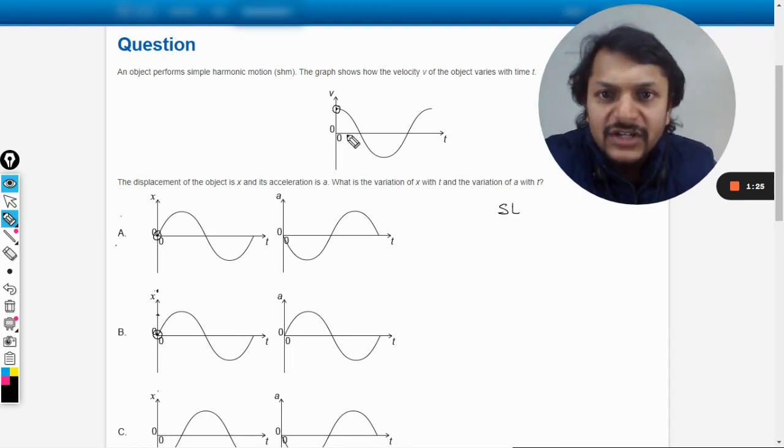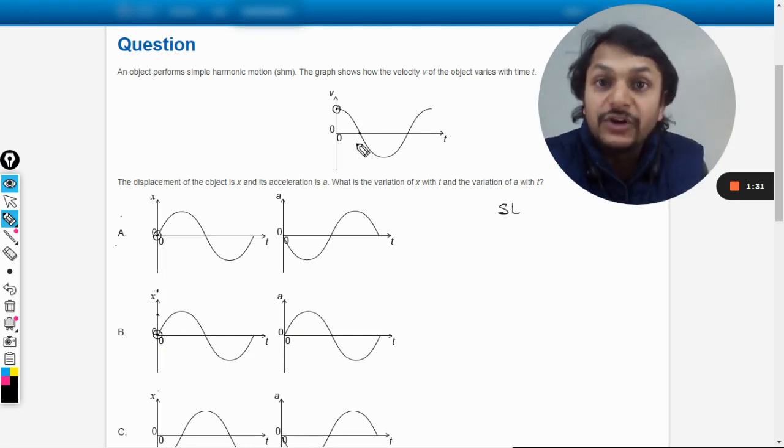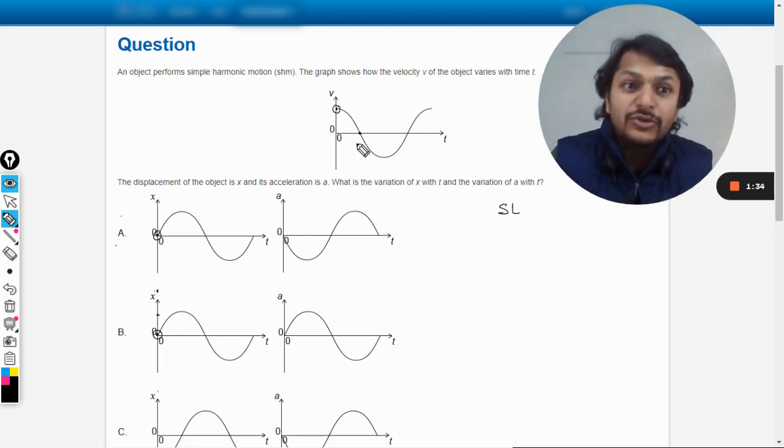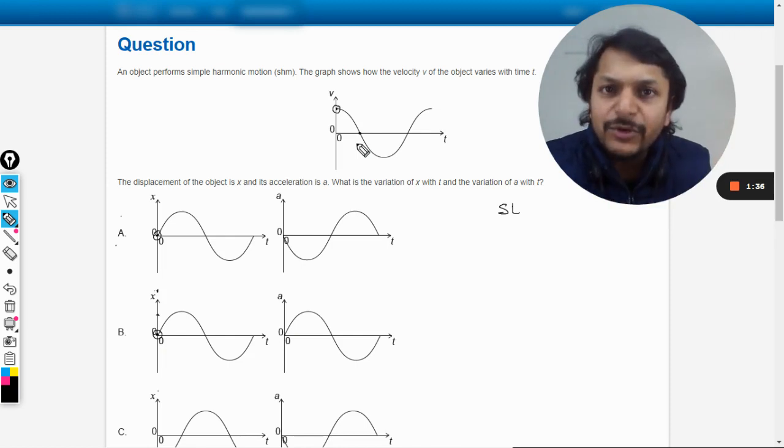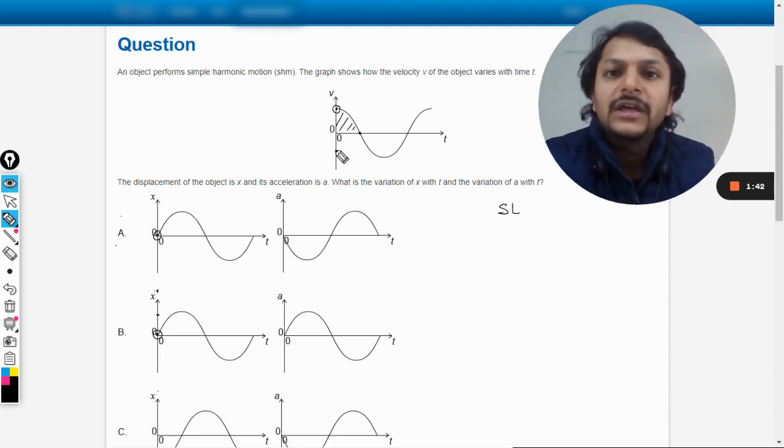Now let us move next. Now it goes to this position and the velocity becomes zero. When is the velocity zero in simple harmonic motion? Only at the extreme position. It means that this person should be at the extreme position.